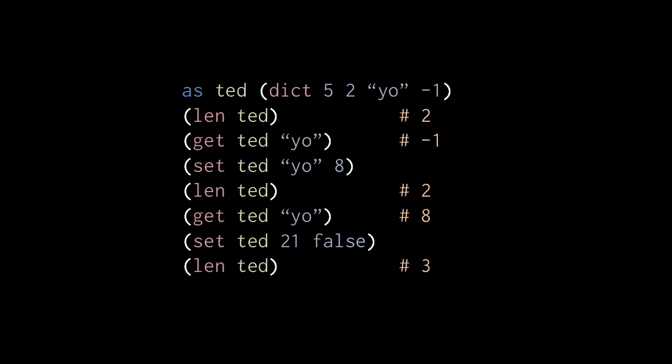Get ted yo 0 returns negative 1, the value of the key yo. Set ted yo 8 changes the value of the key yo from negative 1 to 8. Len ted still returns 2 because the number of key-value pairs has not changed. Get ted yo returns 8, the current value of the key yo.